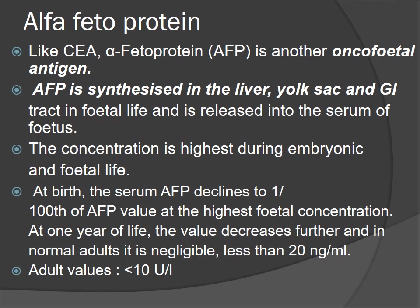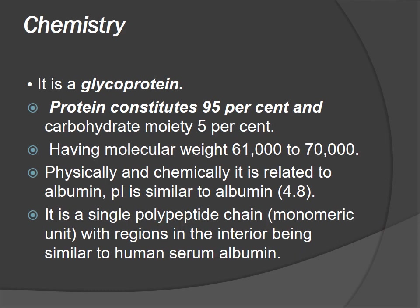Alpha-fetoprotein (AFP): like CEA, AFP is another oncofetal antigen. AFP is synthesized in the liver, yolk sac, and GI tract during fetal life and is released into the serum of the fetus. Concentration is highest during embryonic and fetal life. At birth, serum AFP declines to one-hundredth of the peak fetal concentration. By one year of life it decreases further, and in normal adults it is negligible — less than 10 units per liter. AFP is a glycoprotein; protein constitutes about 95%, carbohydrate moiety about 5%, with molecular weight of 61 to 70 kilodaltons. It is physically and chemically related to albumin, being a single polypeptide chain with structural similarity to human serum albumin.